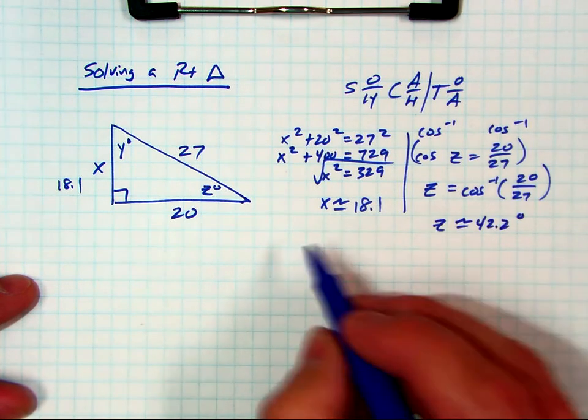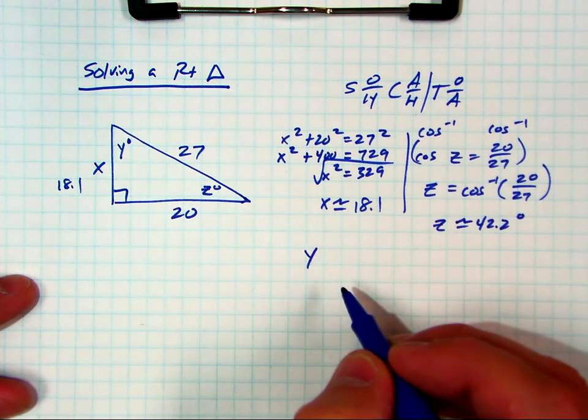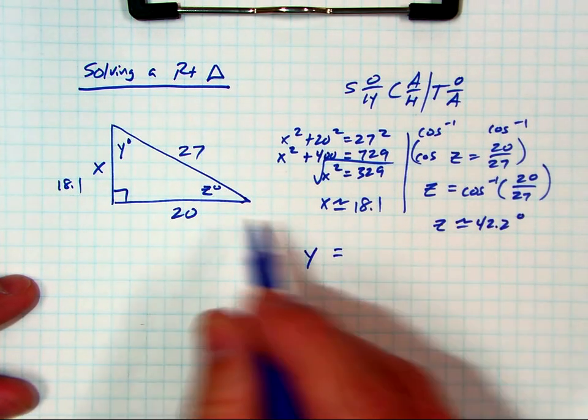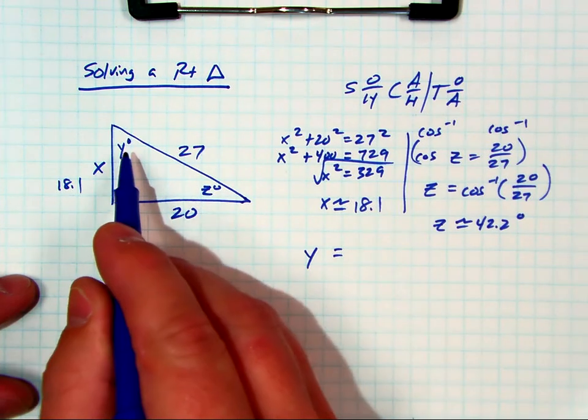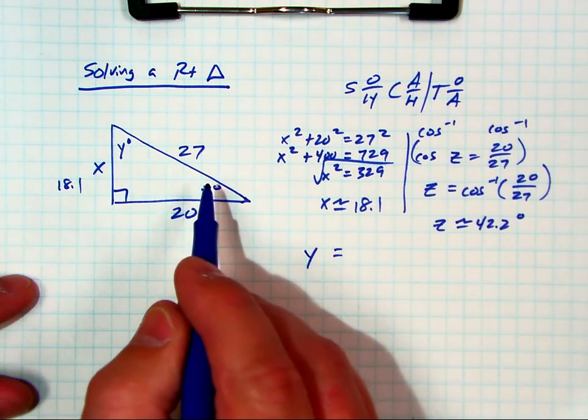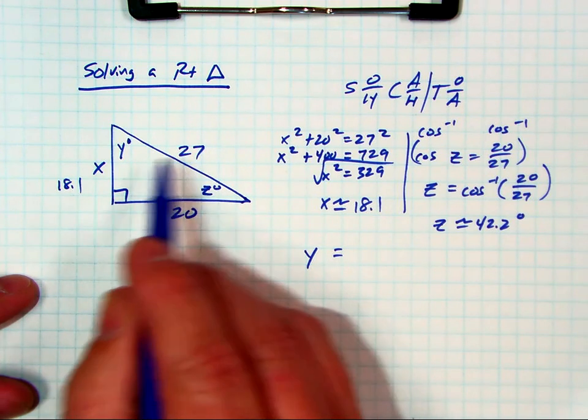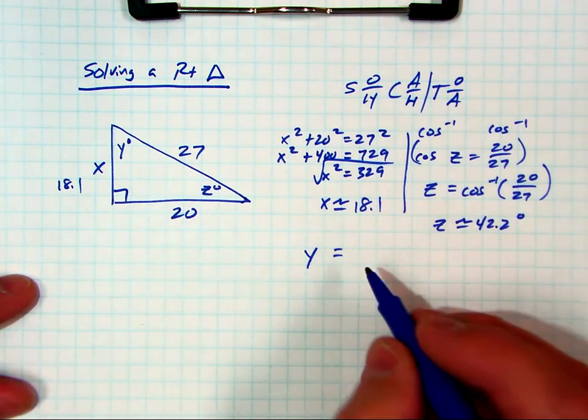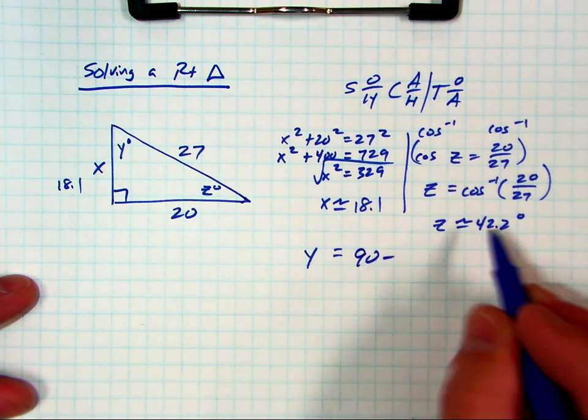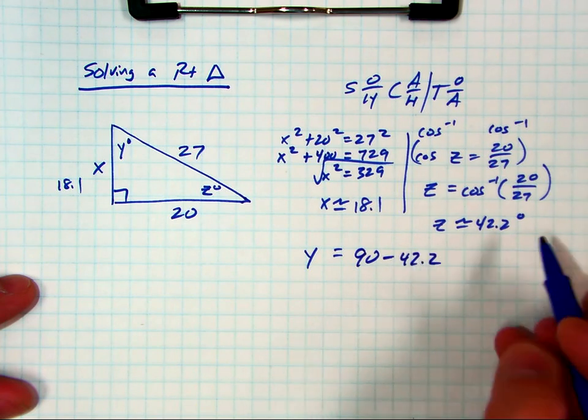And then lastly, how do we find y? If you know one acute angle, how do you find the other one? 90 minus this one, because the three angles have to add up to 180. You're already taking care of 90 right here. So to find the other angle, you just go 90 minus the one you know.